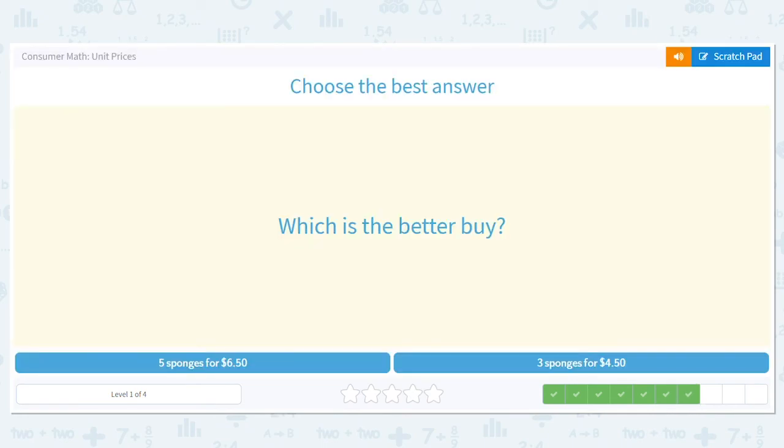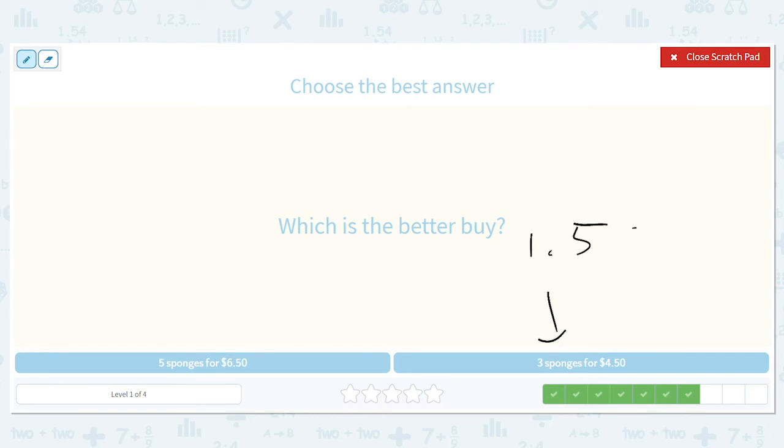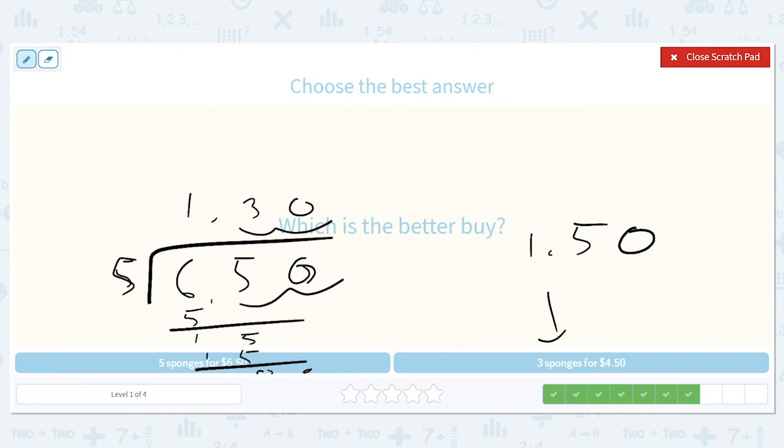Which is the better buy? 5 sponges for $6.50 or 3 sponges for $4.50? Okay, so $4.50 divided by 3 is $1.50. $6.50 divided by 5, let's go ahead and just work it out, will be $1.30. That's cheaper than $1.50 per sponge, so we probably want to go with this one.